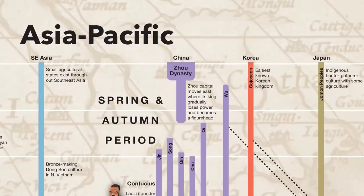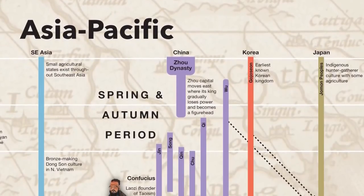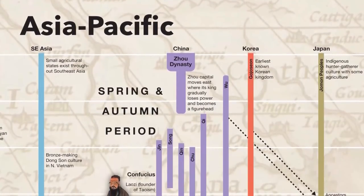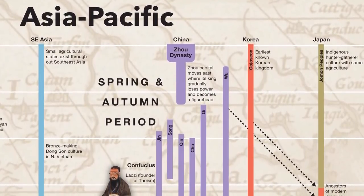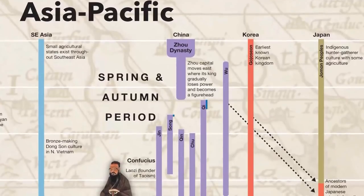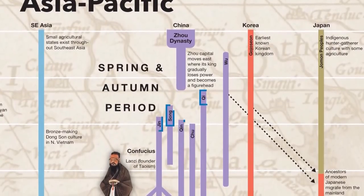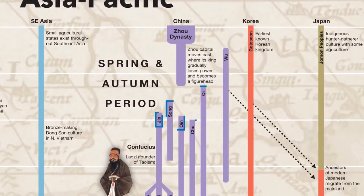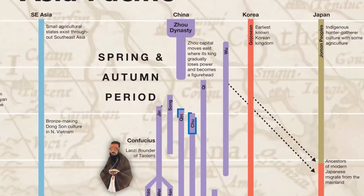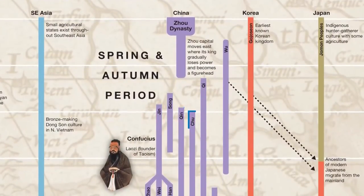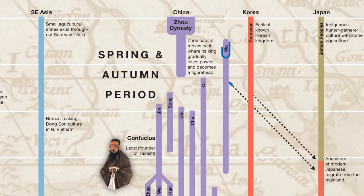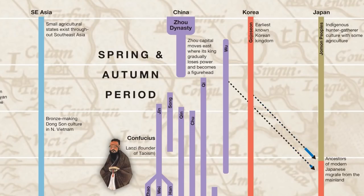During the Spring and Autumn Period, various Chinese states took turns dominating, including Qi, Song, Jin, Qin, and Chu. And to the North was an additional state known as Wu. It is perhaps from Wu, as well as the ancient Korean kingdom of Gochoson, that the ancestors of the modern Japanese came.